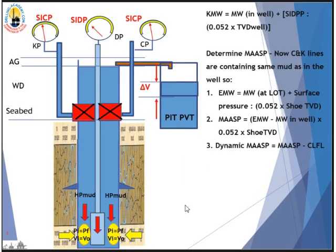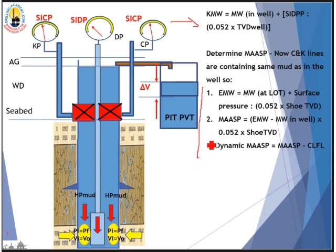We work out the kill mud weight using the classic formula. Now that the choke and kill lines contain the same fluid as in the well, we simply use this formula to work out the kill mud weight. Don't forget to account for choke line friction loss — take it off the kill mud weight for the dynamic kill mud weight.